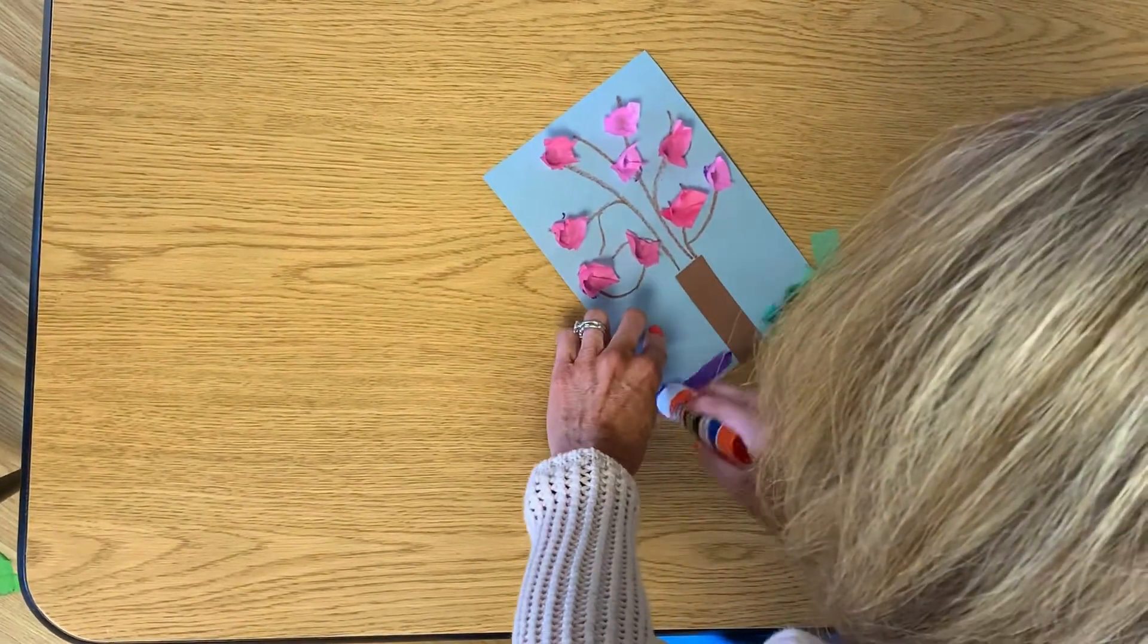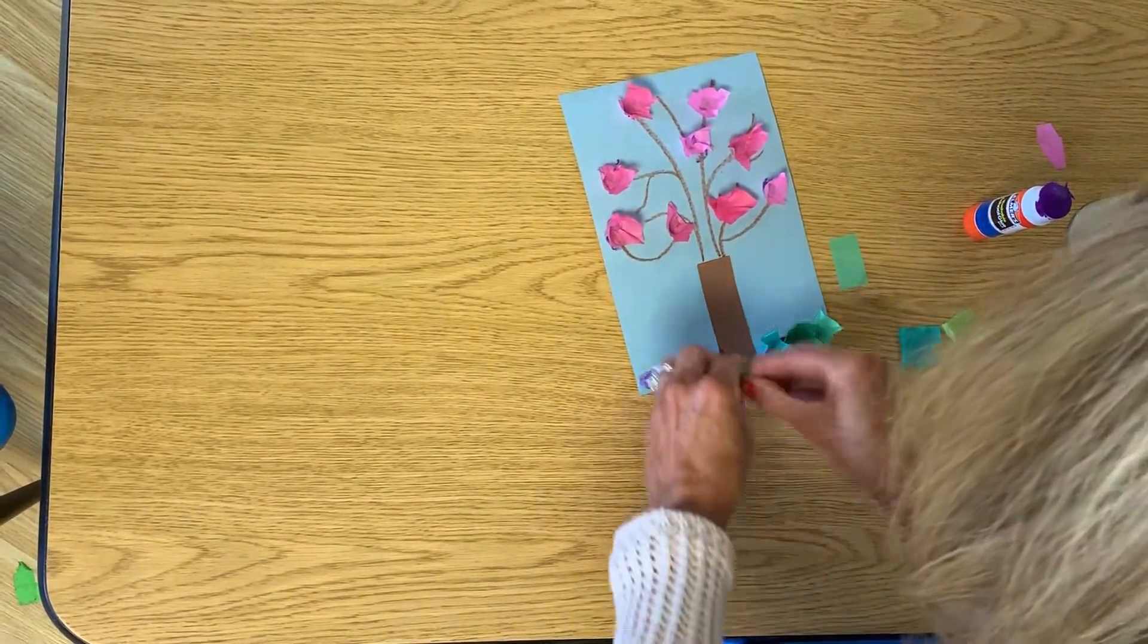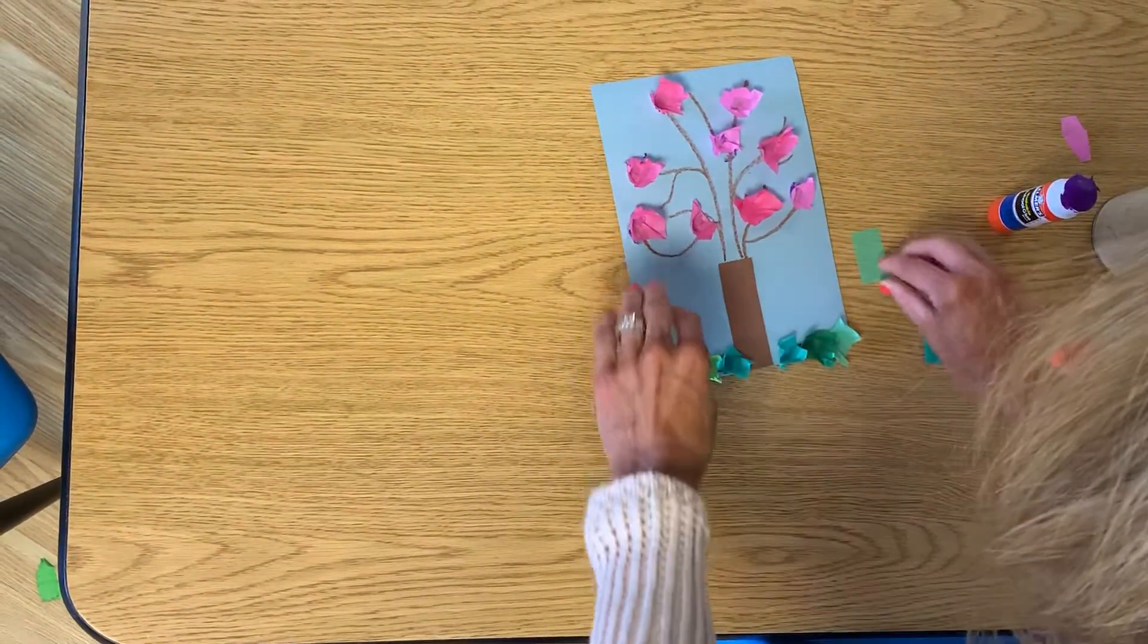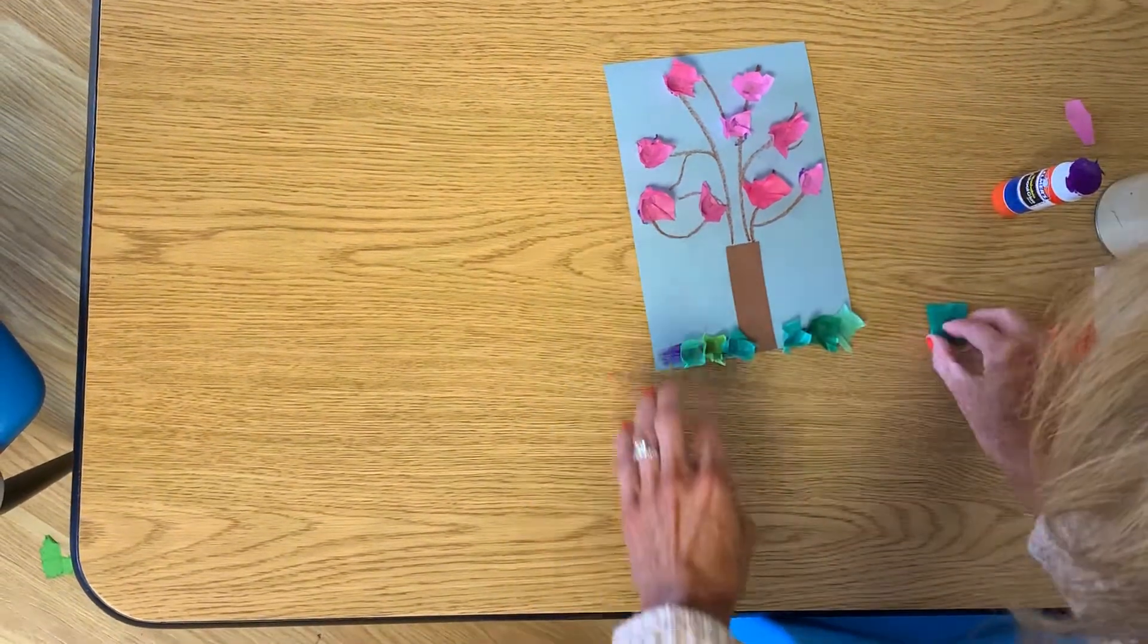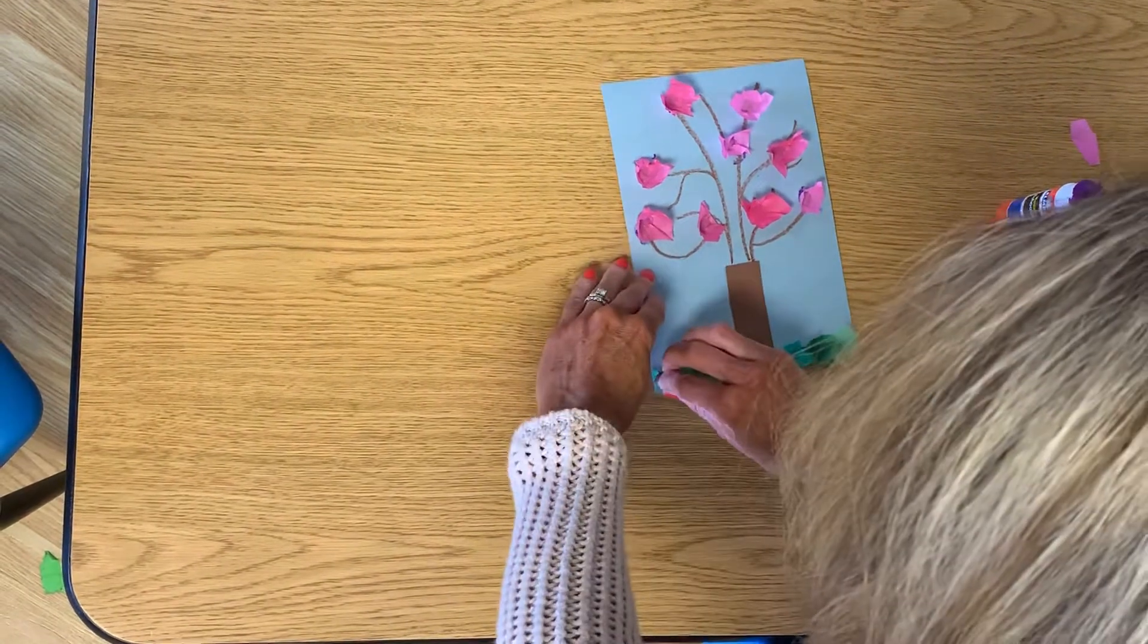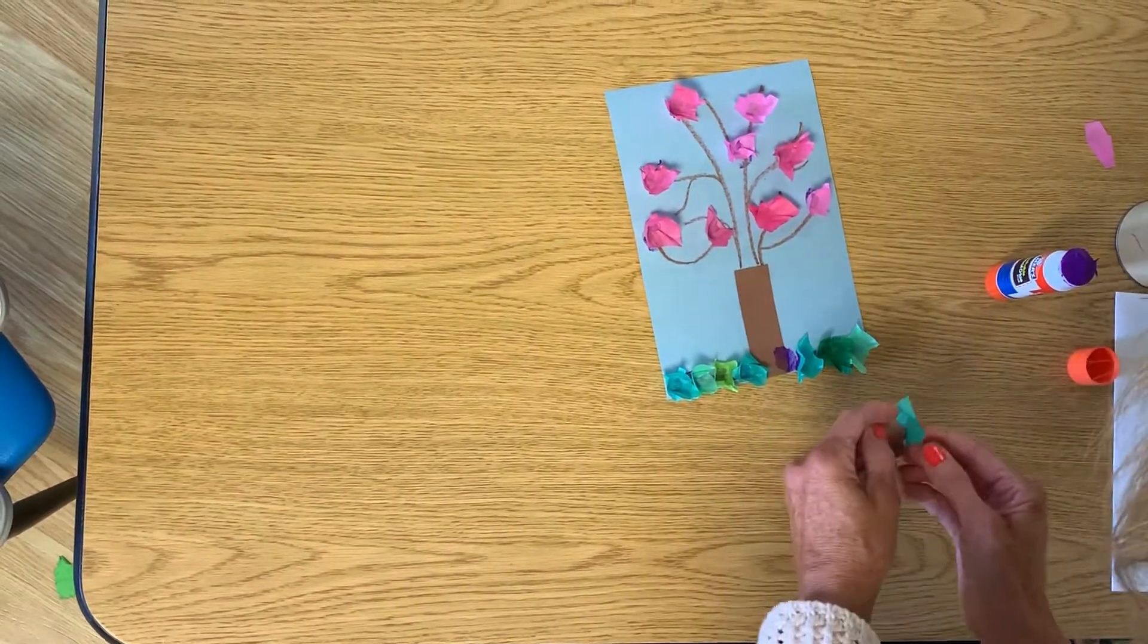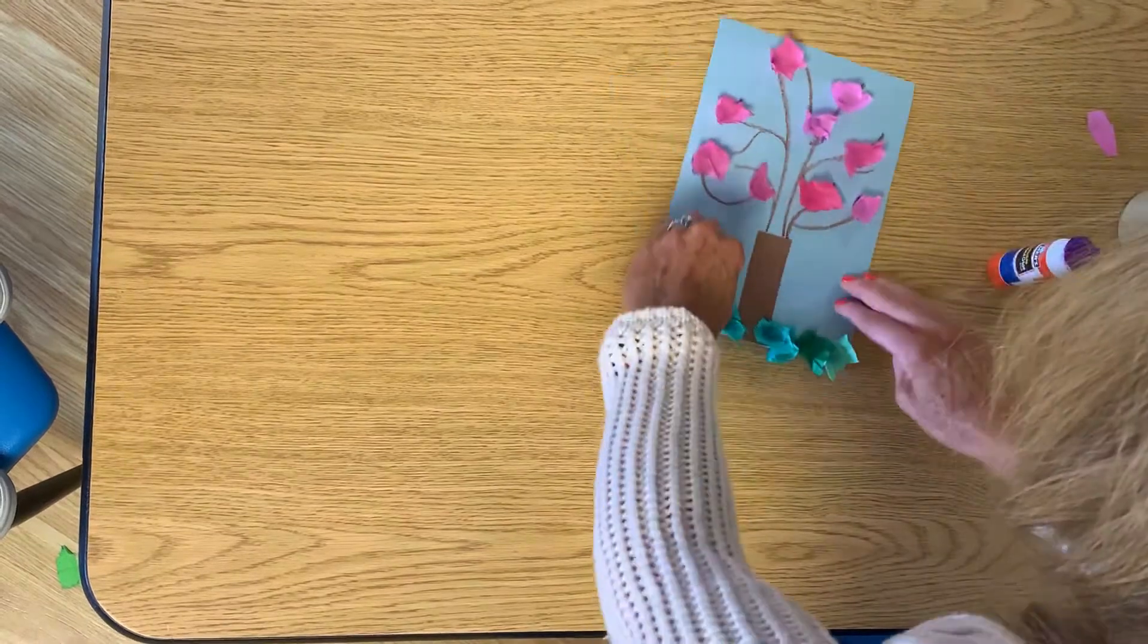And I need some grass on this side. Remember, all I'm doing is I'm wrapping that around the tip of my finger. Such a pretty blossoming tree I have here. And I have one more piece. I think I'm going to squeeze it in right over here. There we go.